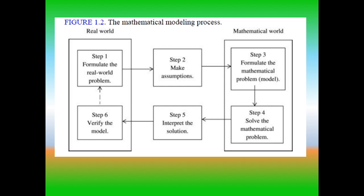After getting the solution from step four, we need to interpret the solution to the realistic theme in step five. Finally, in step six, we need to give a judgment — the solution we got is to be checked by an expert. Once all these steps are completed, the same thing can be converted back to the real world again. That's why the loop exists from step one to step six.